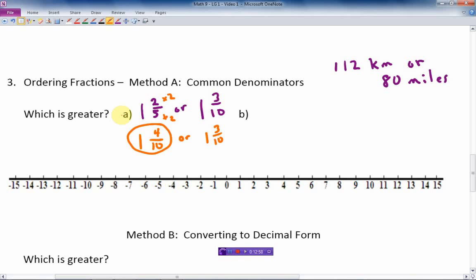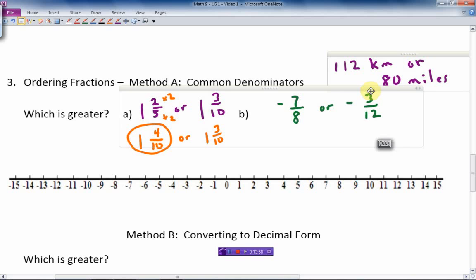We could also do this with negatives as well. So let's just put a couple examples down here. Say I had negative seven tenths or negative three-fifths. That's a pretty simple example. Actually, I'm going to change this midstream here. This is just too much like the last problem we just did. We're going to change it to, let's make this seven-eighths and this one three-twelfths. Which is greater?